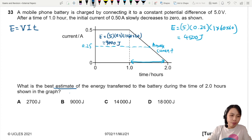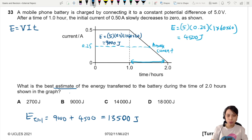So in total, if I were to use this method to estimate, the energy in total during those two hours would be 9,000 plus 4,500, which will give me 13,500 joules.